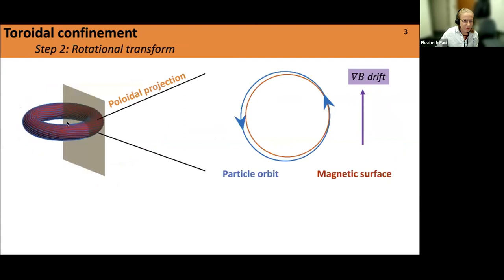Getting field lines that lie on magnetic surfaces is not quite enough, because we have magnetic drifts off of field lines. The lowest-order guiding centers follow the field lines on these magnetic surfaces, but to the next order they start to drift away. One of the drifts we see in magnetic confinement devices is the grad-B drift. In a torus, the field strength is naturally larger on the inboard side than on the outboard side, giving rise to a drift that is largely vertical.